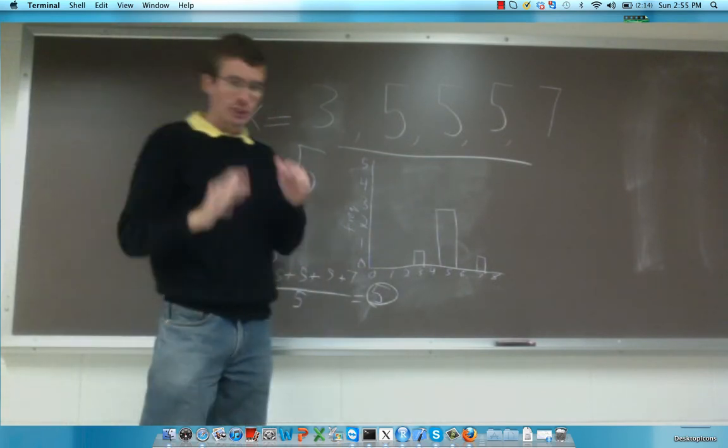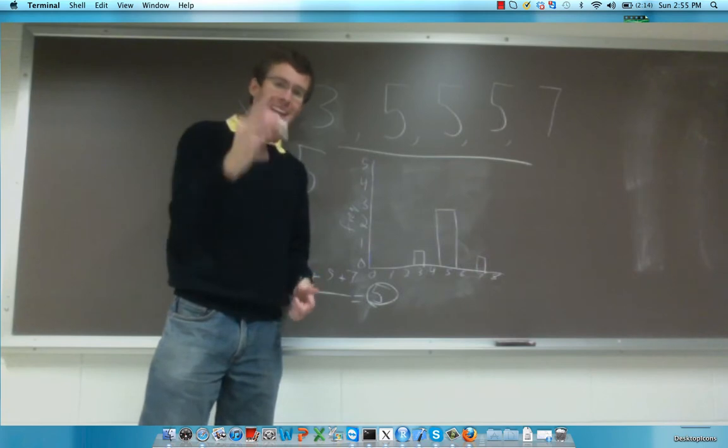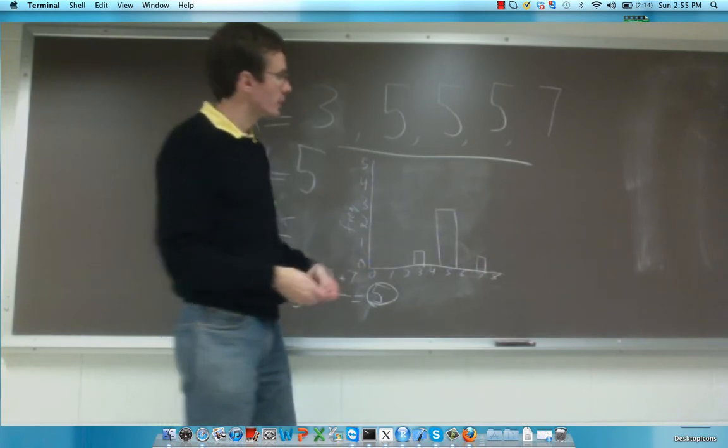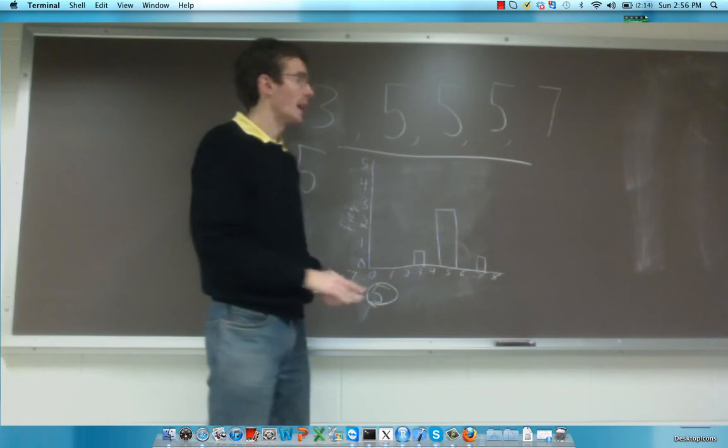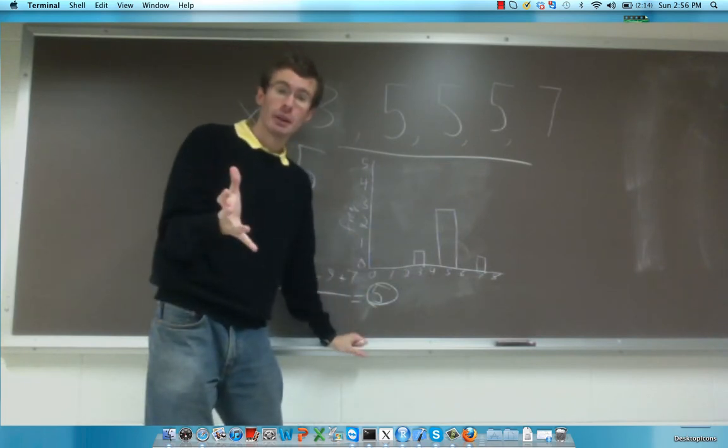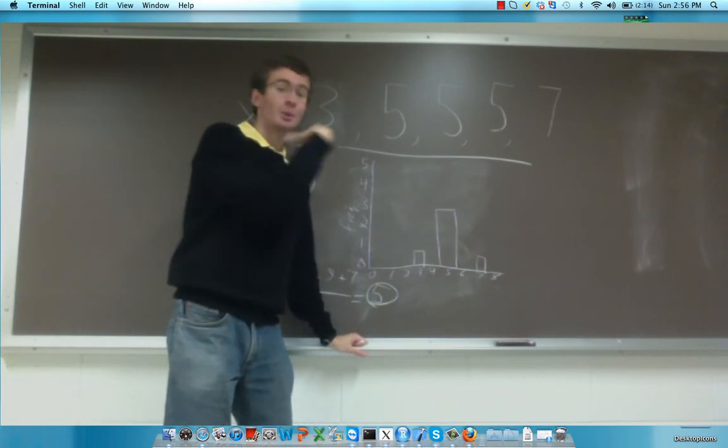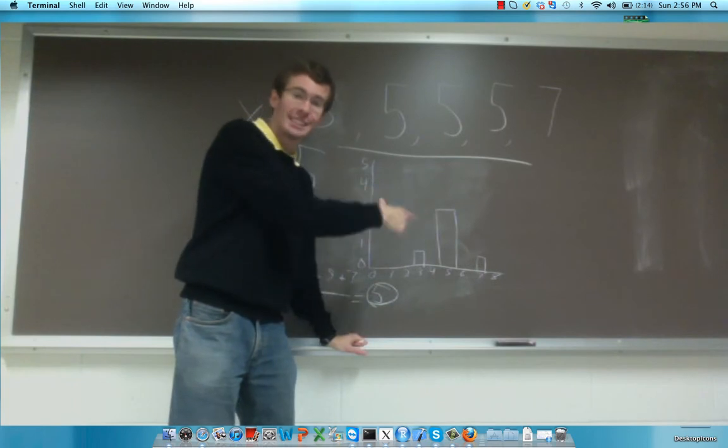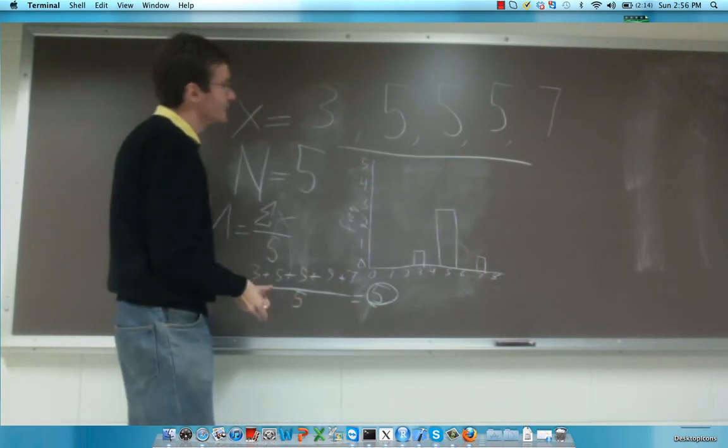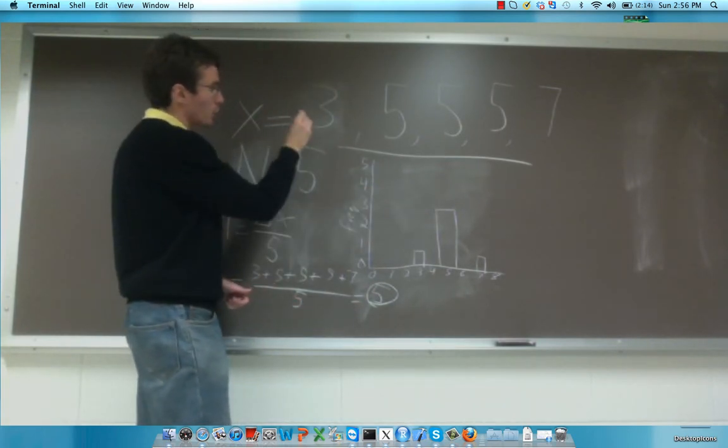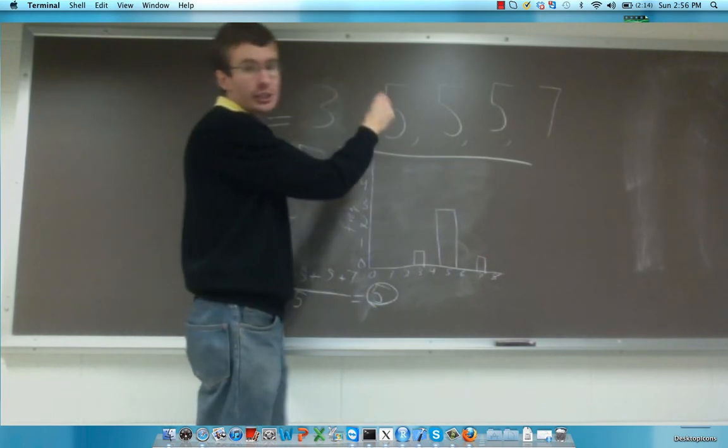A couple other measures of central tendency are the mode and the median. The mode is simply the most common observation, or the observation with the highest frequency. You can see this pretty easily from your frequency table or frequency histogram, and it's easy to figure out when you arrange your data from the smallest to the largest value.